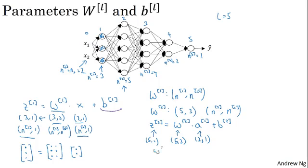And similarly, w3 is really the dimension of the next layer comma the dimension of the previous layer. So this is going to be 4 by 5, w4 is going to be 2 by 4, and w5 is going to be 1 by 2.